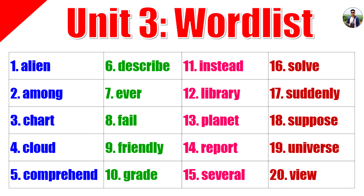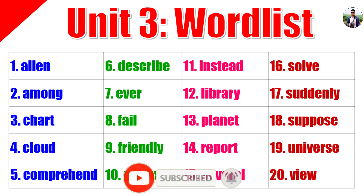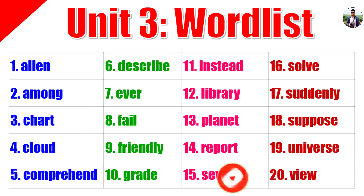Solve: To solve something is to find an answer to it. All the students could easily solve the math problem. Suddenly: If something happens suddenly, it happens quickly and unexpectedly. I was suddenly surprised by the cake my friends brought me. Suppose: To suppose is to guess. I suppose I should go home now. Universe: The universe is the known or supposed objects in space. The universe is so large that it cannot be measured.